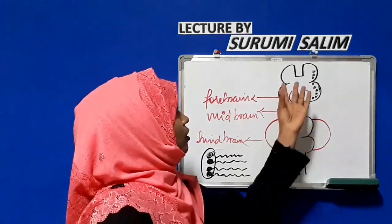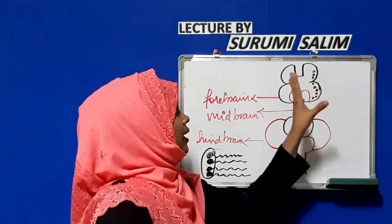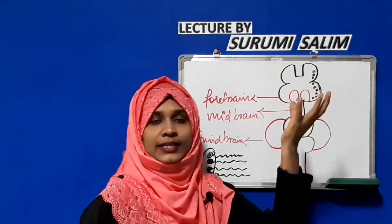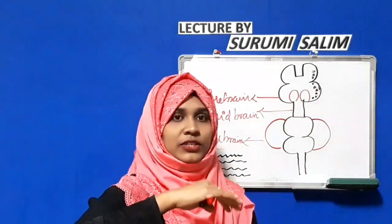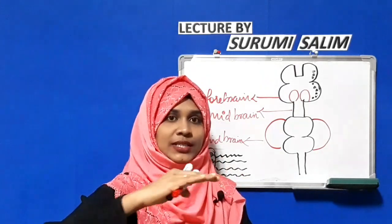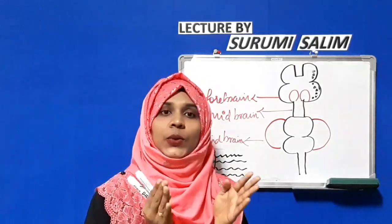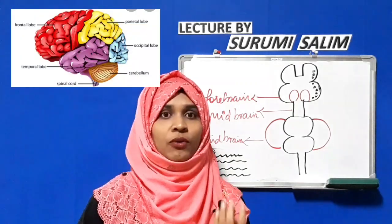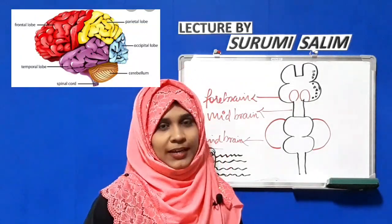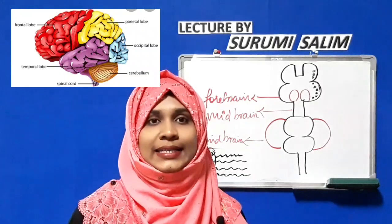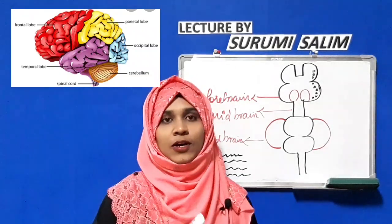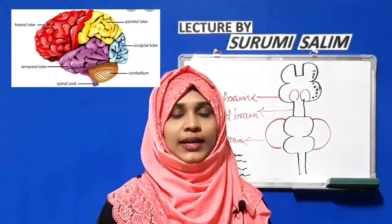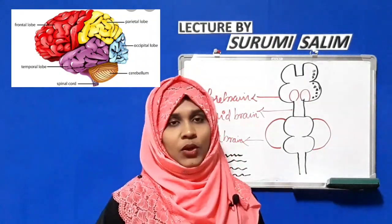The forebrain consists of the cerebral cortex and the diencephalon. The cerebral cortex, which is gray matter, is divided into four major lobes: the frontal lobe, parietal lobe, temporal lobe, and occipital lobe. It also has a circuit called the limbic system.